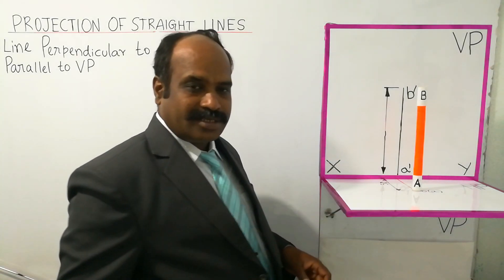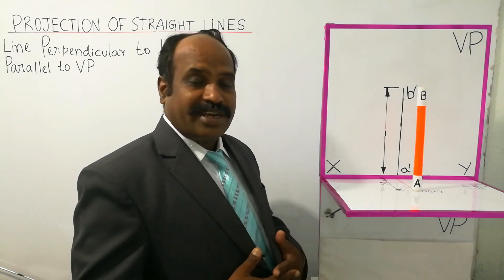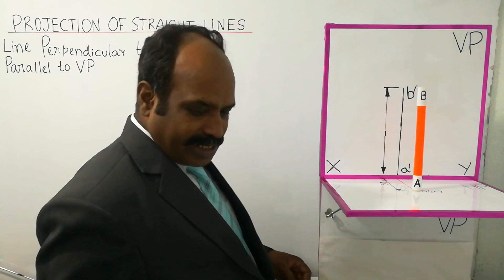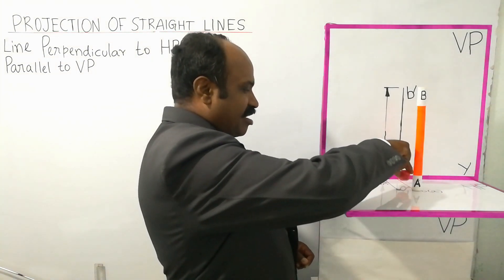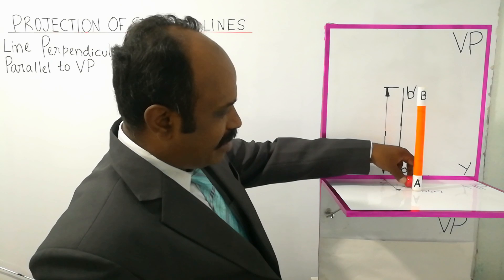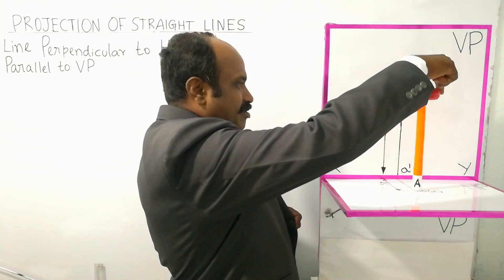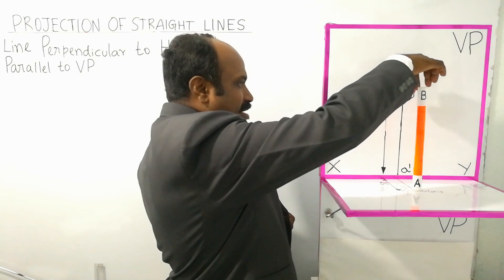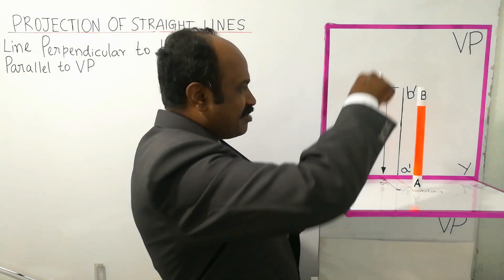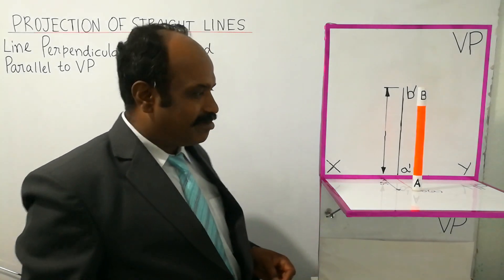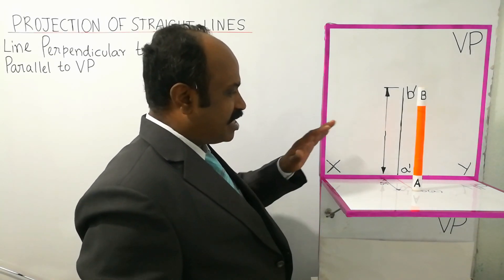The line is perpendicular to HP. Point A and HP touch at a point — point A is projected on the HP. Mark the projected points as A' and B'. The line is 100mm long. After projecting on the respective VP, you will need to draw the view.